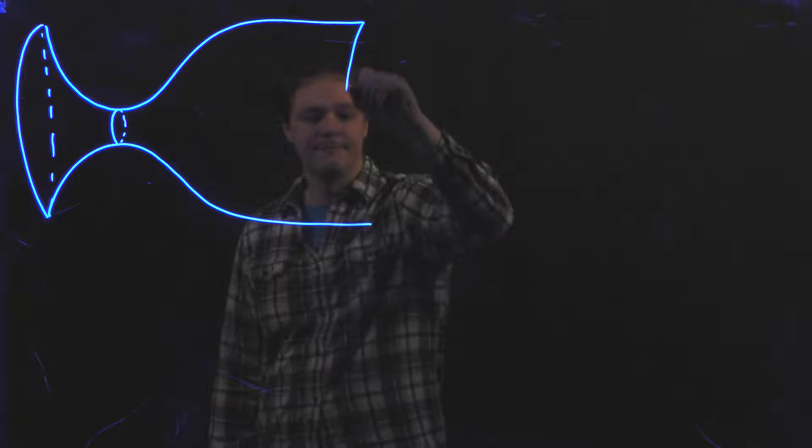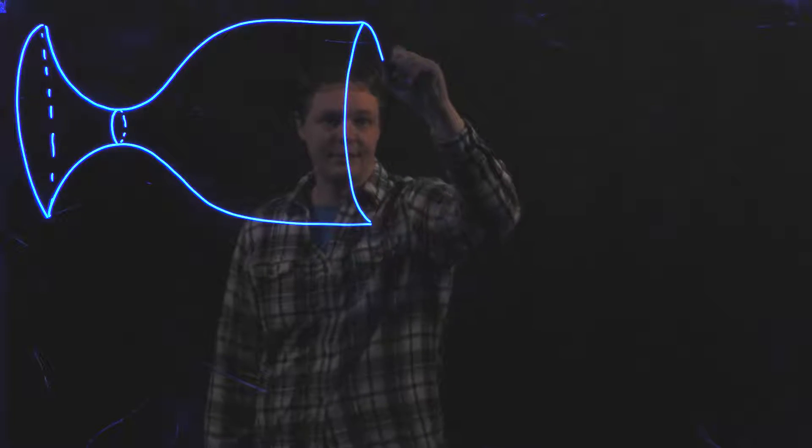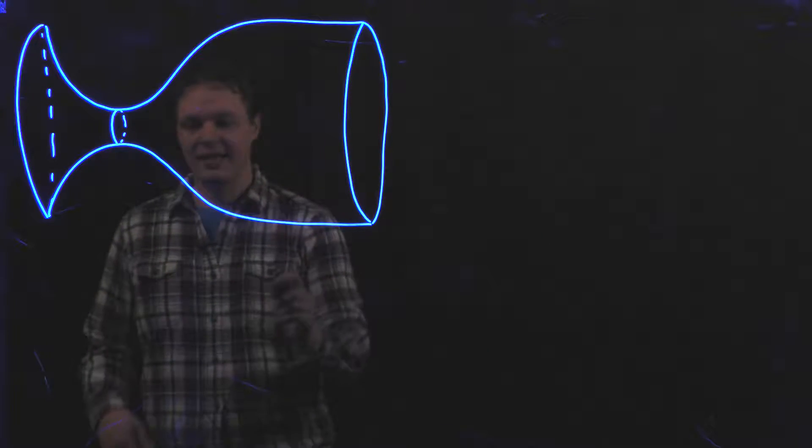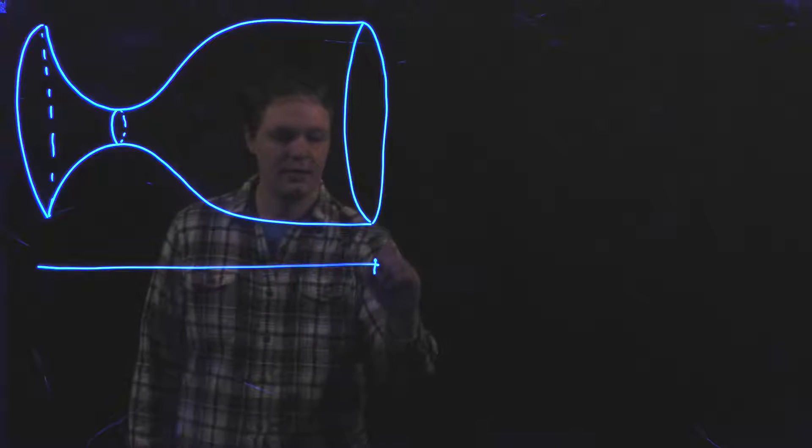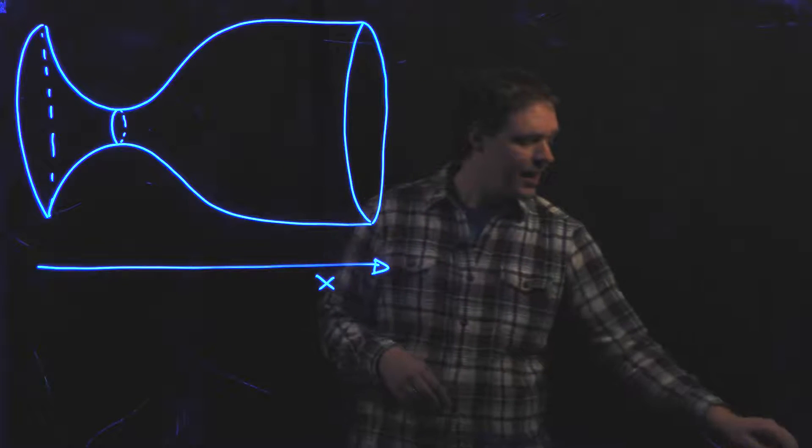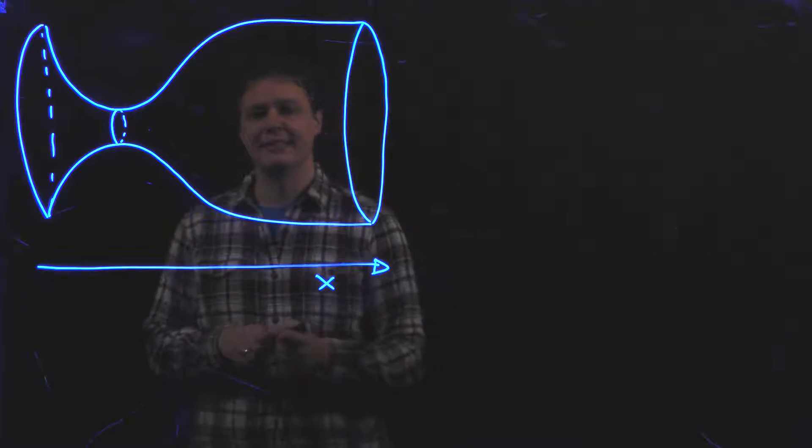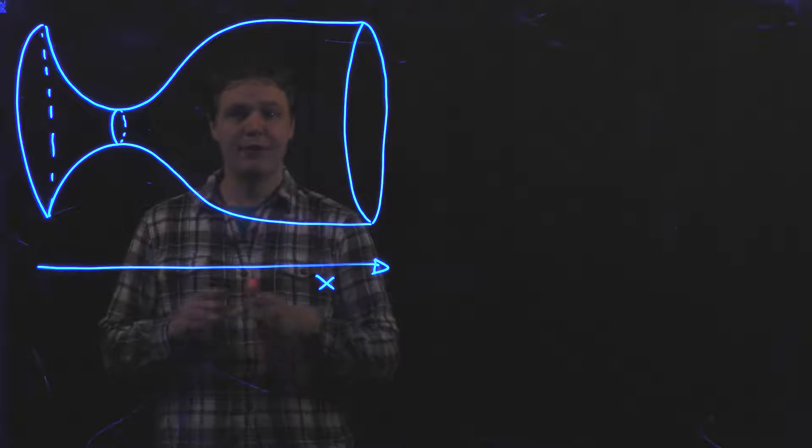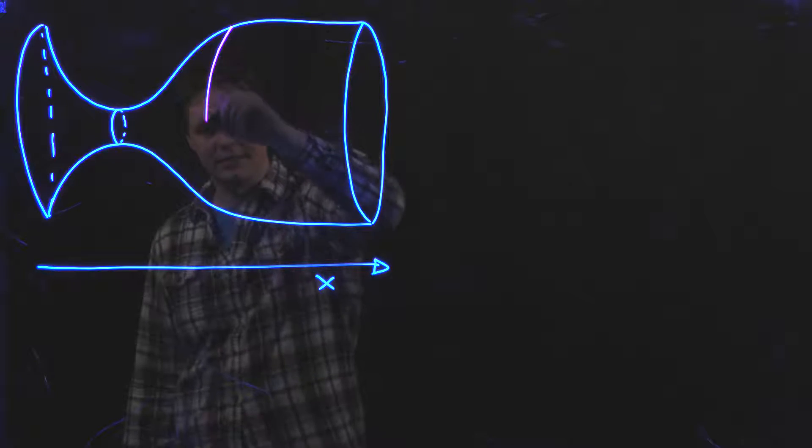The nozzle has a circular cross-section that changes as I move along in the x-direction. And there are many quantities that will change in the flow of the gas as I go along this x-direction.